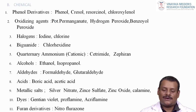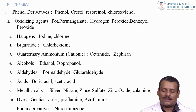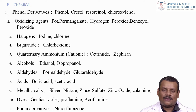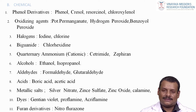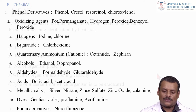Chemical methods include phenol derivatives such as phenol, cresol, resorcinol and chloroxylenol. Oxidizing agents are potassium permanganate, hydrogen peroxide and benzoyl peroxide. Halogens include iodine and chlorine; biguanides include chlorhexidine. Quaternary ammonium compounds used are cetrimide and benzalkonium chloride; alcohols include ethanol and isopropanol; aldehydes include formaldehyde and glutaraldehyde. Acids such as boric acid and acetic acid are used; metallic salts include silver nitrate, zinc sulfate, zinc oxide and calamine. Dyes include gentian violet, proflavine and acriflavine; furan derivatives include nitrofurantoin.